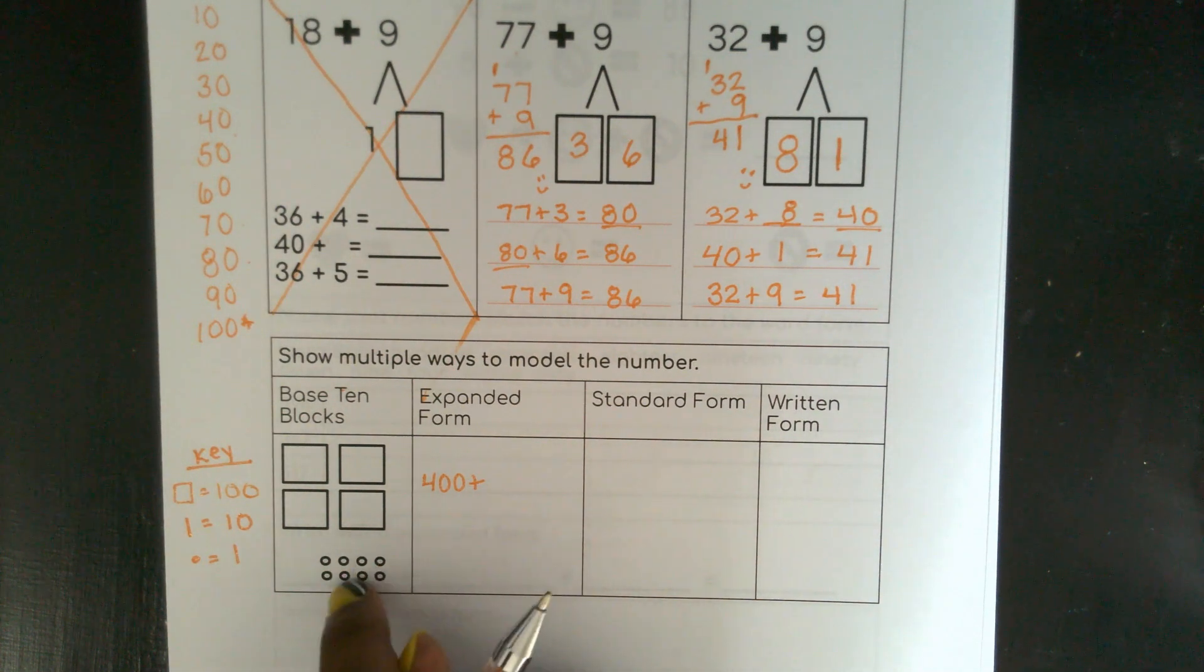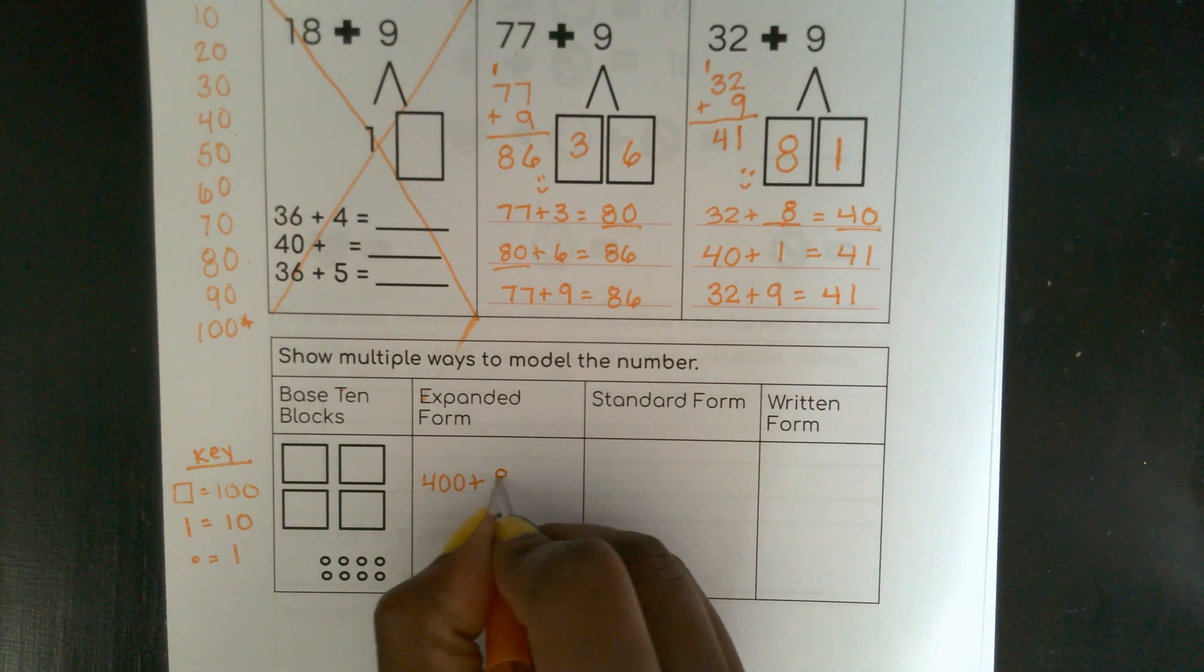How many 1s do I have? 1, 2, 3, 4, 5, 6, 7, 8. I have 8 ones.